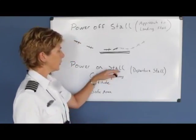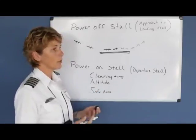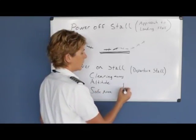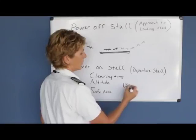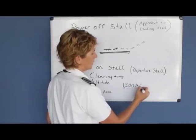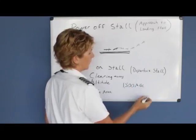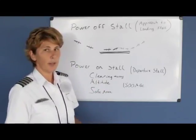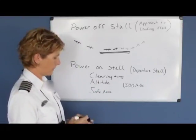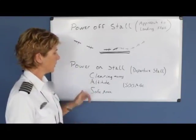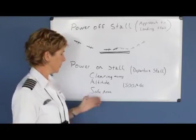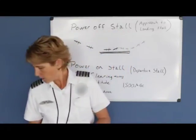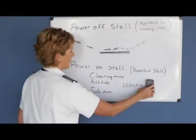The altitude for your air work — for the stalls, steep turns, and slow flight — you're to complete the maneuver no lower than 1,500 AGL. So at least start this maneuver at 3,000 if not 3,500. Once you've cleared the area, you're at the appropriate altitude, and you're over a safe area, we're ready to set the maneuver up.